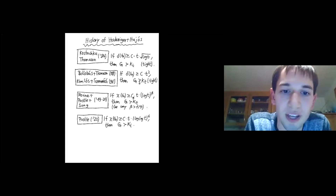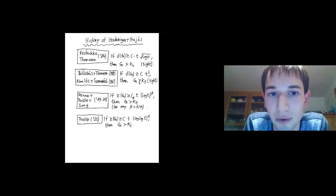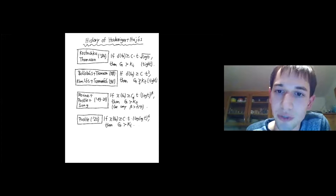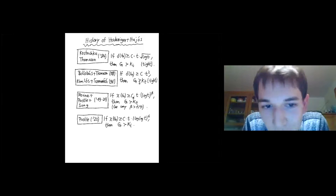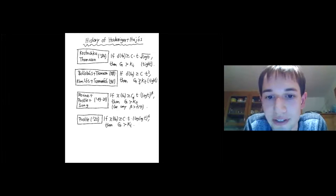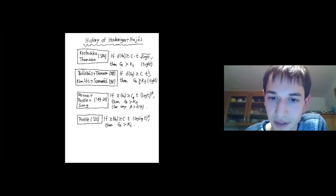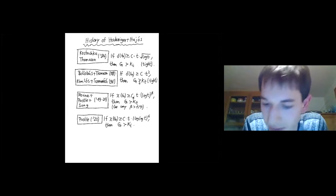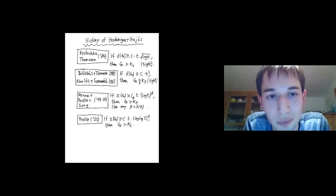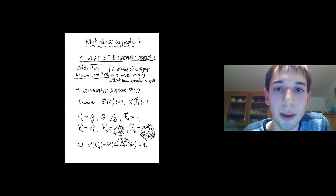For the K_t-subdivision-free setting, a tight bound of quadratic minimum degree was obtained by Bollobás-Thomason and independently by Komlós-Szemerédi. A breakthrough came in 2019–2020 when Norin, Postle, and Song improved the order of magnitude for forcing K_t as a minor from t·√(log t) to t·(log t)^(1/4), and Postle further improved it to t·(log log t)^6, which is currently the best known. This concludes the historical overview of Hadwiger's conjecture.